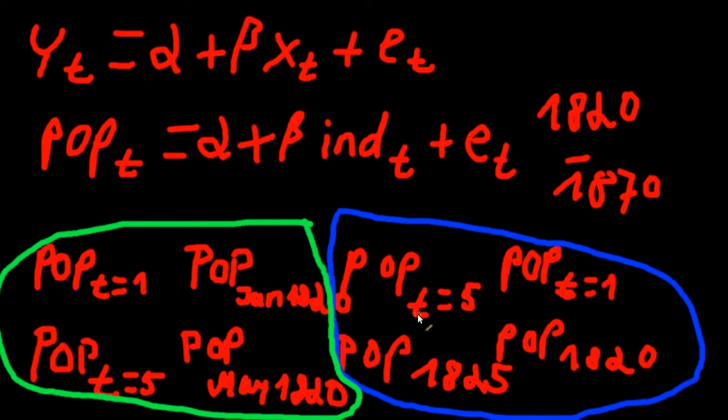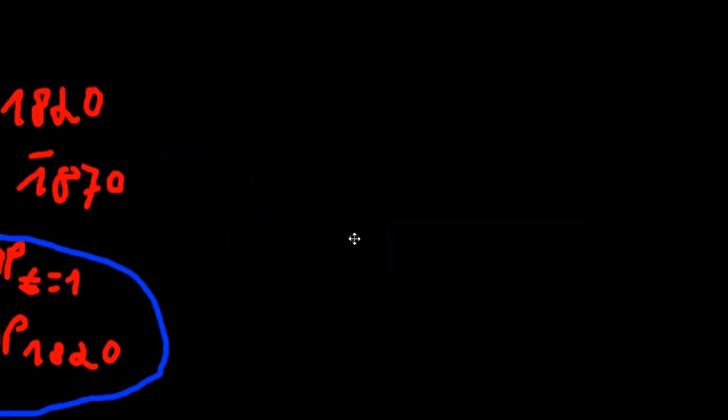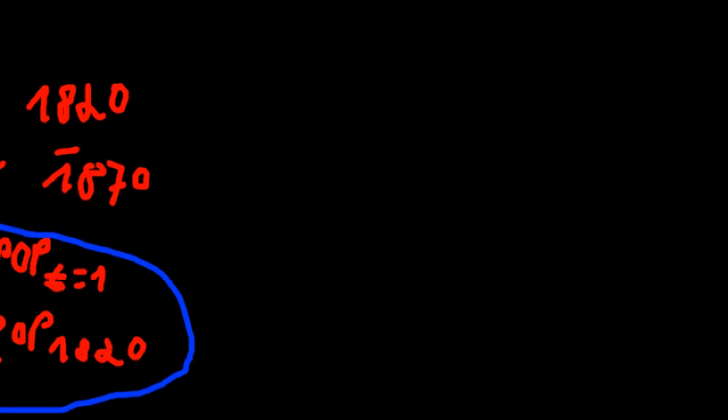Now, in principle, you could do the exact same stuff you did with cross-sectional data. So let's say you ran a regression and beta would be equal to 200. This means that when you increase the number of industrial plants in the Netherlands by one in year t, you would also increase the population in year t by 200. So you see, it's basically the exact same method we've used for cross-sectional data.